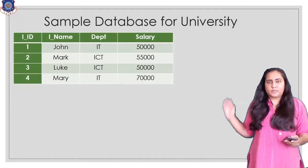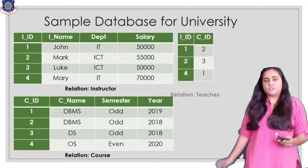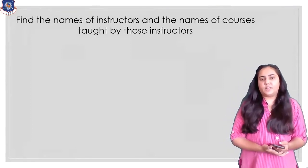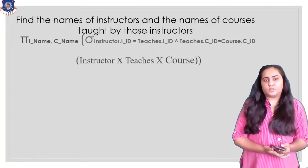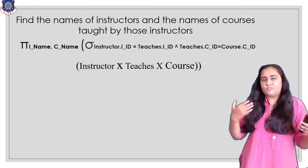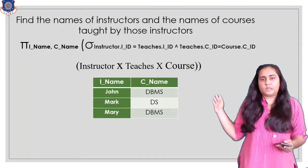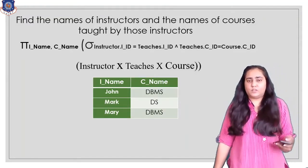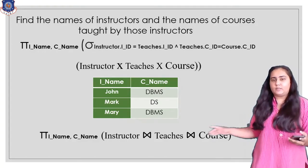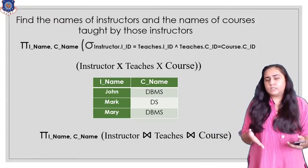The database we are going to use contains an instructor table, a course table, and a teachers table showing the relationship between instructors and courses. We want to find the names of instructors and names of courses taught by those instructors. With a Cartesian product you would write the query from the previous video. With natural join you write: instructor natural join teachers natural join course, using the bowtie symbol for natural join.